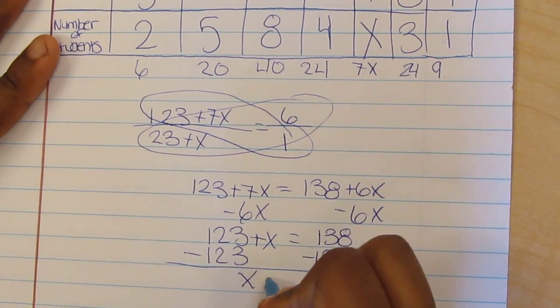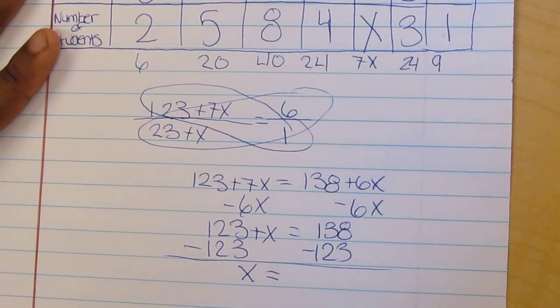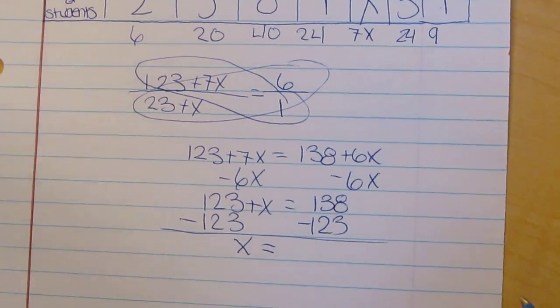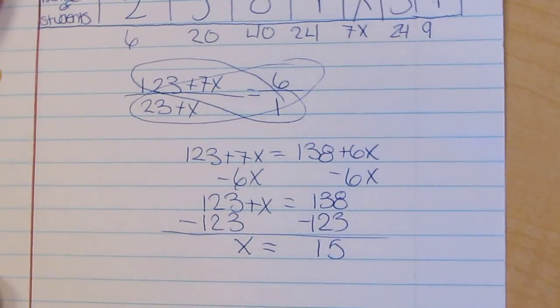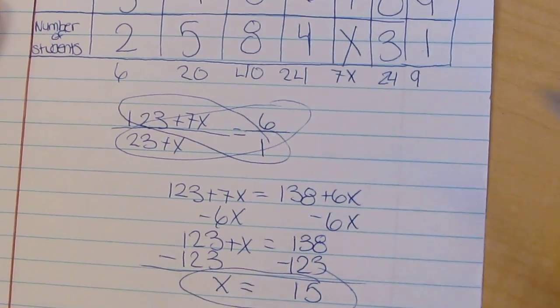That leaves you with X equals 15, and that's how you find the missing number.